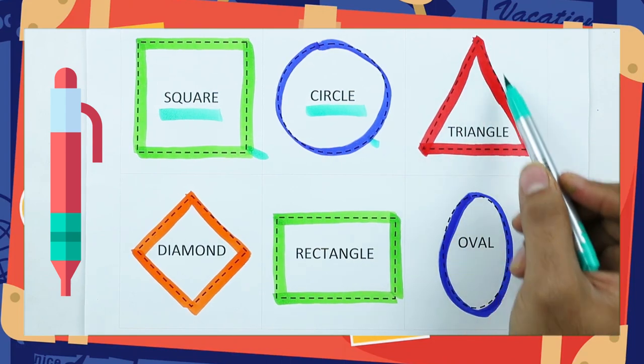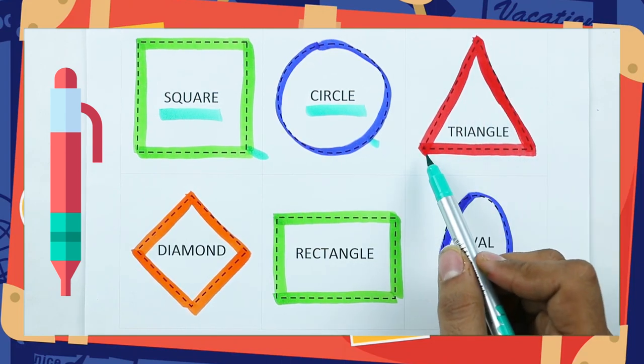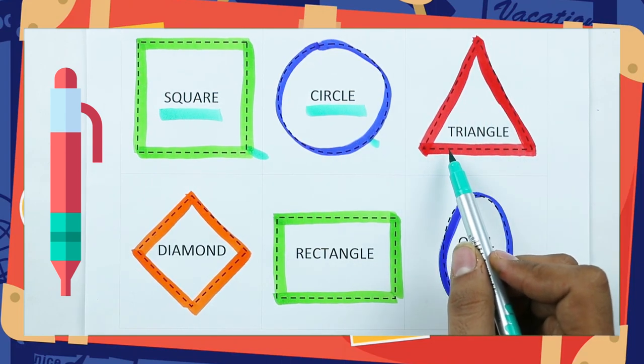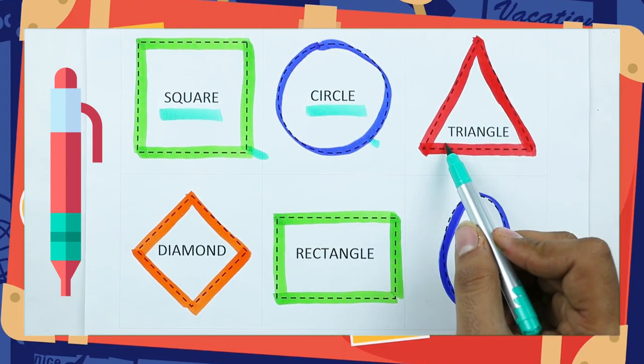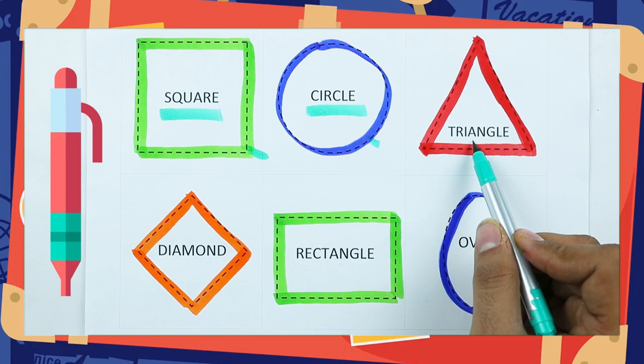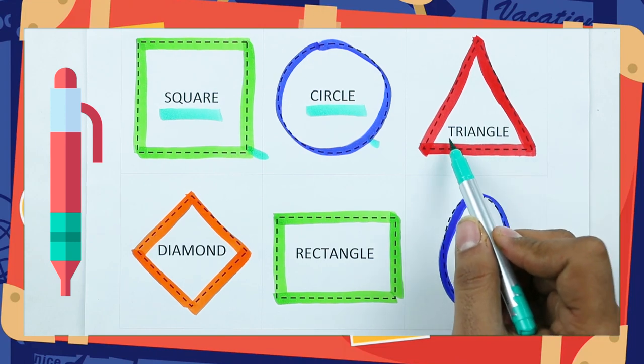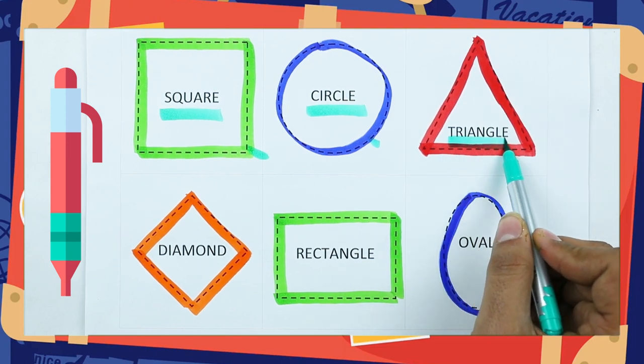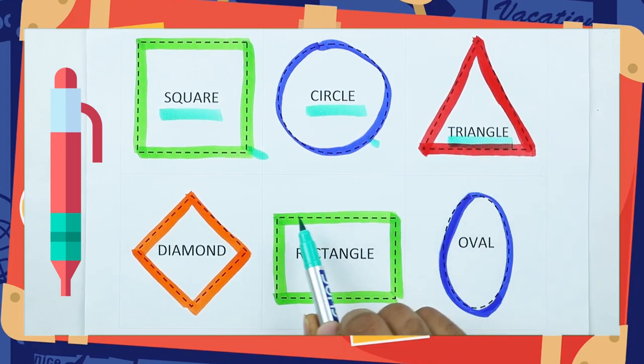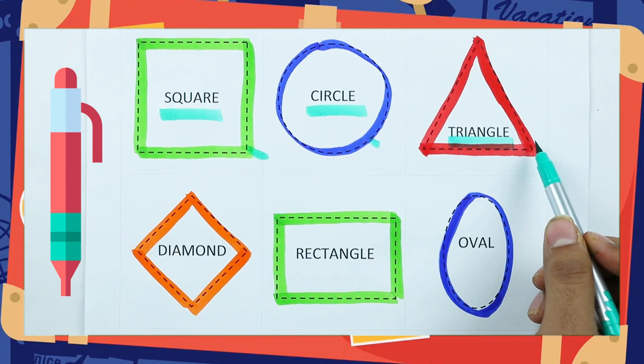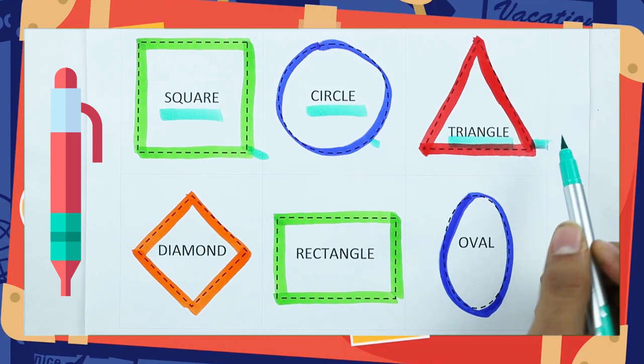Which shape is this? Triangle. T-R-I-A-N-G-L-E. It's a triangle, with red color.